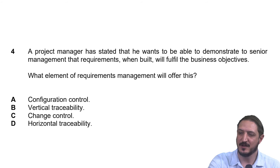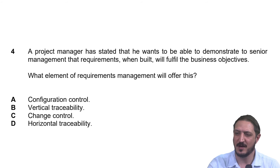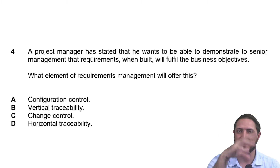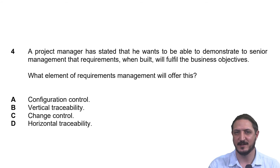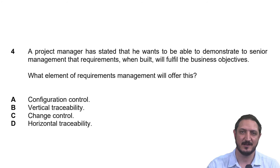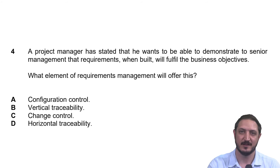If we take a look at this question now, we need to establish that it is talking about requirements management — the broad area of knowledge. It asks what element of requirements management will offer this. We have a project manager demonstrating to senior management that requirements, when built — after elicitation, analysis, and the whole process — fulfill the business objectives. The solution is now supporting and moving the business forward in terms of its objectives, which also supports the business strategy. This indicates we are talking about vertical traceability.